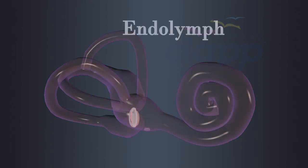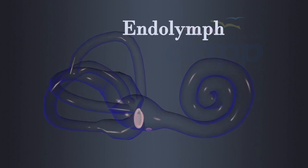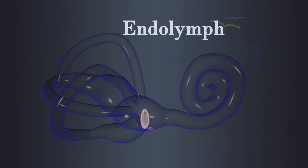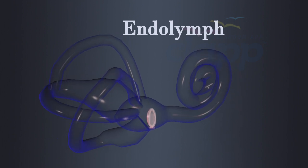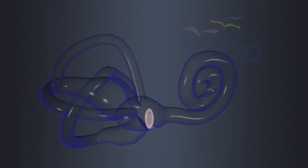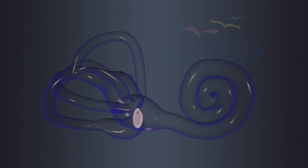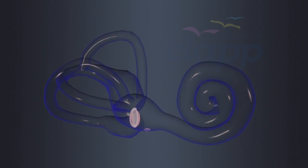Membranous labyrinth is filled with a fluid called endolymph. Endolymph plays a crucial role in maintaining the proper functions of sensory structures responsible for both hearing and body balance. It also helps to transmit sound vibrations. Endolymph is filled inside cochlea, vestibule and three semicircular canals.